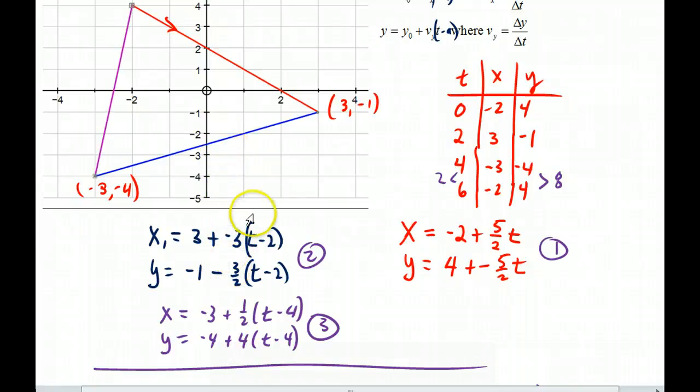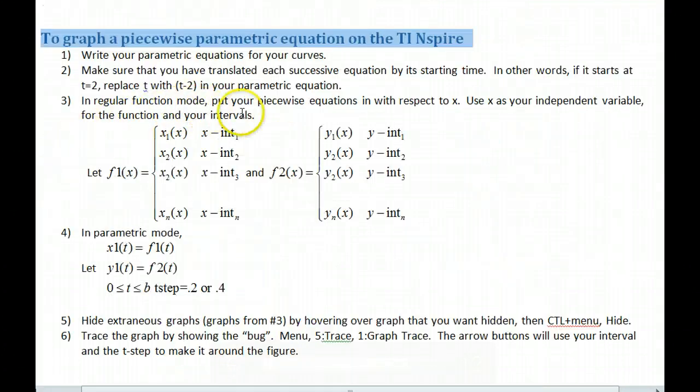For instance here, this is the equation of the blue line, but then I had to translate it T minus 2, T minus 2, because I was starting 2 seconds later. This is the equation of the purple line, but with the translation in it, T minus 4, T minus 4, because I was starting at time 4. In regular function mode, put your piecewise equations in with respect to X. Use X as your independent variable for the function and your intervals.